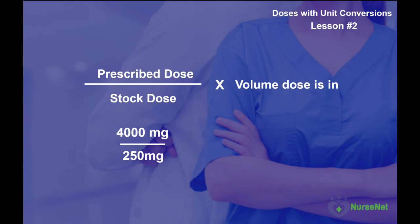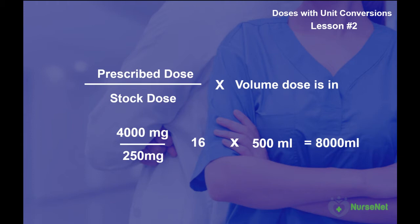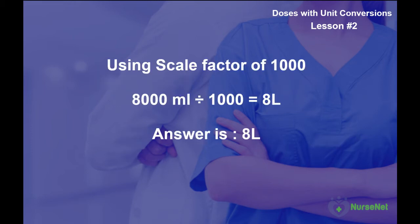Now we can answer the question. 4,000 milligrams divided by 250 milligrams equals 16. 16 multiplied by the volume of the solution — in this case 500 millilitres — gives us 8,000 millilitres. But now we want to convert this into its simplest form. We can see that 8,000 millilitres can be converted into litres using the scale factor of 1,000, dividing 8,000 by 1,000 to give us 8 litres.